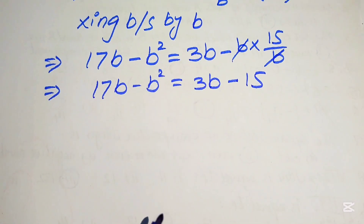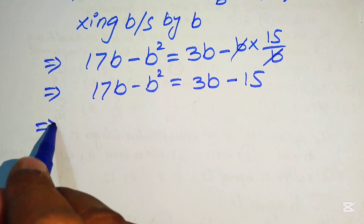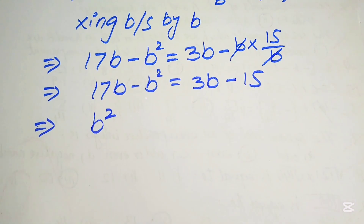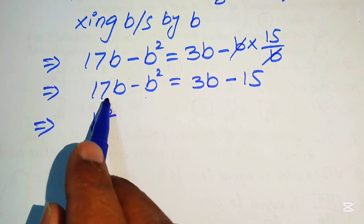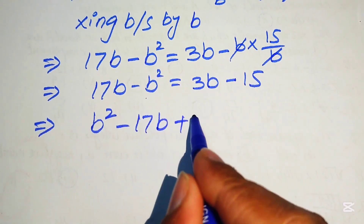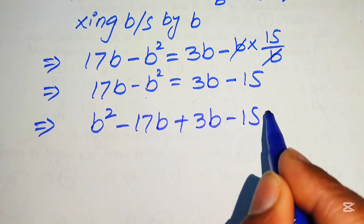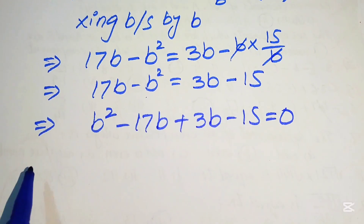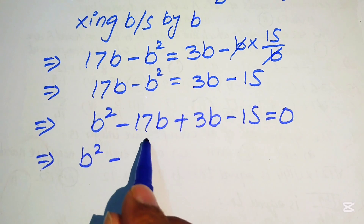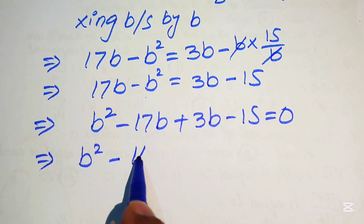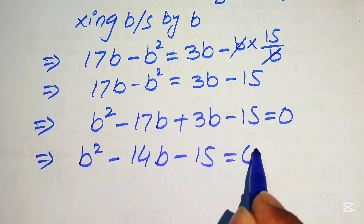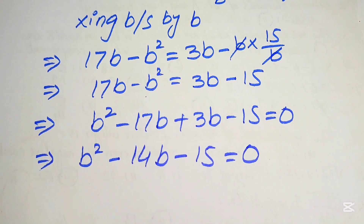Moving all terms to the right-hand side: minus B squared plus 17B becomes plus B squared minus 17B, giving B squared minus 14B minus 15 equals 0. The equation is now in quadratic form.